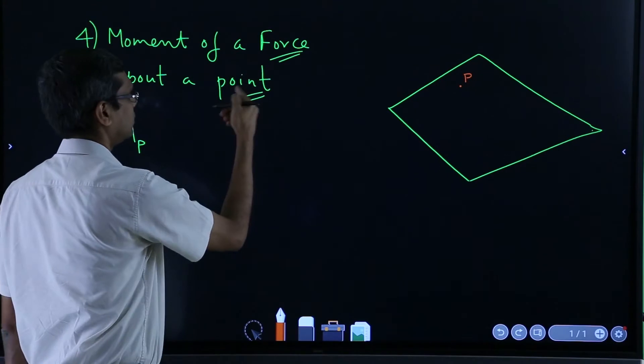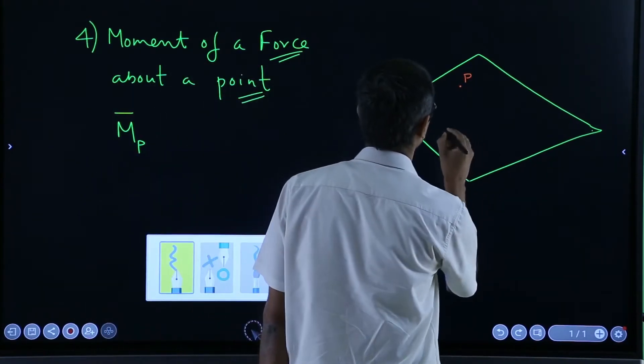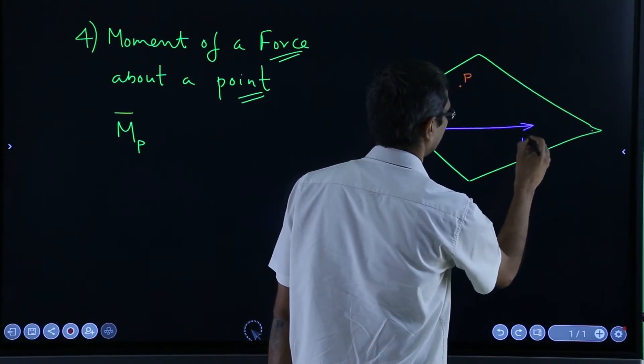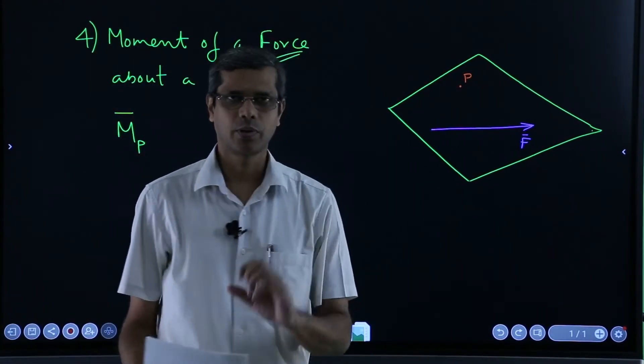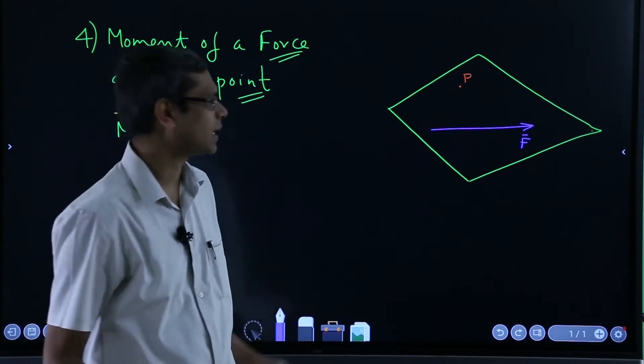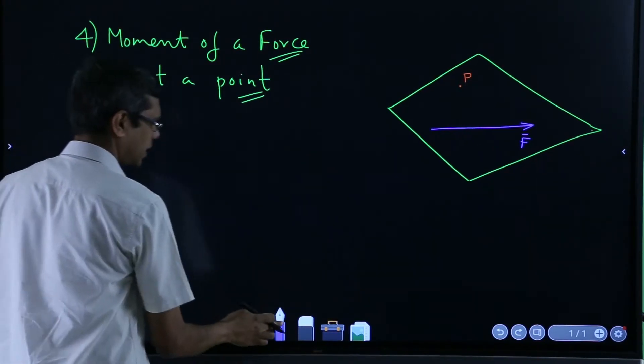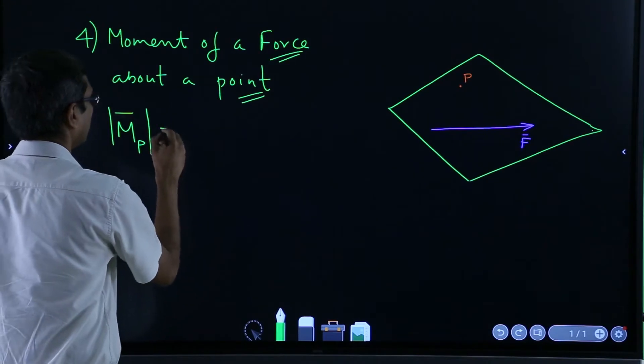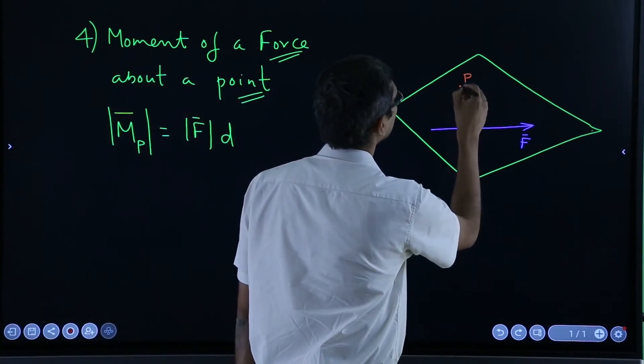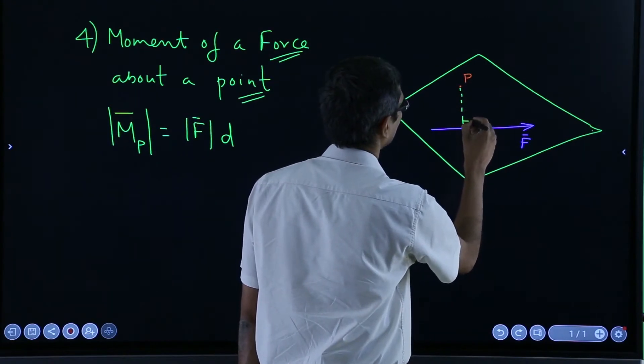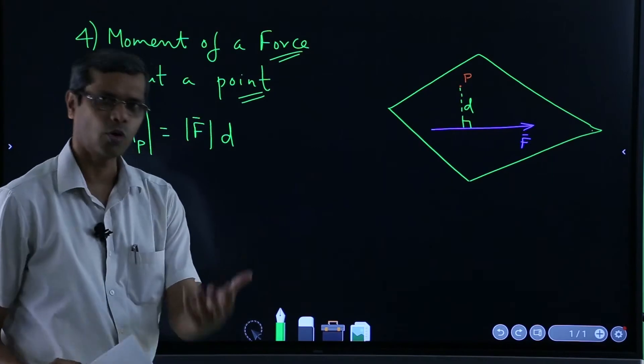This is the point which we are talking about. This is nothing but force magnitude times distance, when this distance is the shortest distance. So this distance d, F magnitude times d is the moment of the force about that point P.